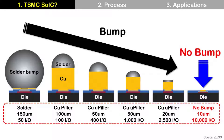Continuing further, 20-micrometer bump pitch can make 2,500 I/O per square millimeter. How about 10-micrometer pitch? It is difficult to make by copper pillar, which is why it no longer uses bumps at all. And it can make 10,000 I/O per square millimeter — 10,000.